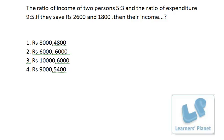Now all the options are given, and since the ratio of income is 5:3, the options should maintain this ratio. We can eliminate just one option that is not maintaining the ratio of 5:3. So now we are left with three choices.